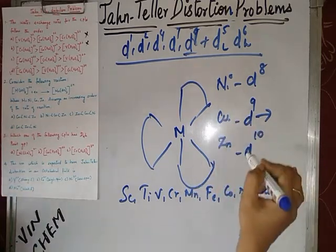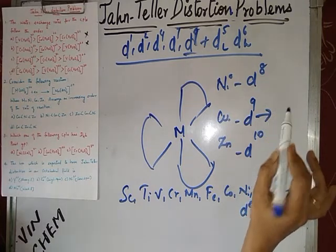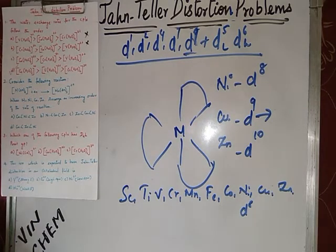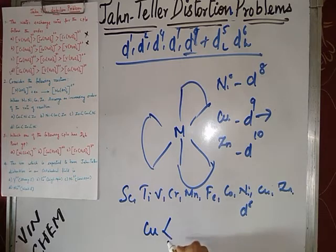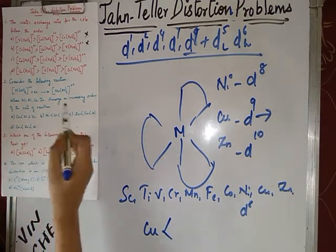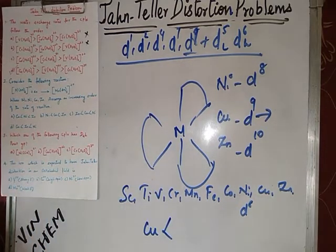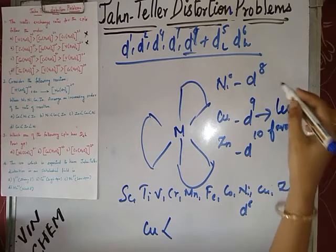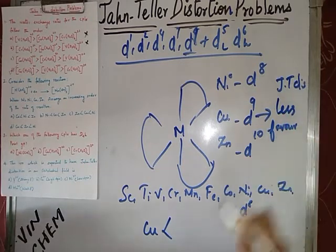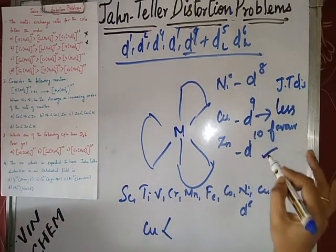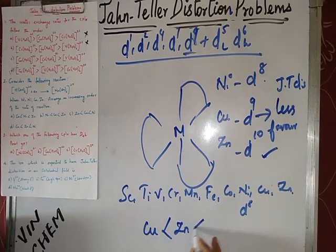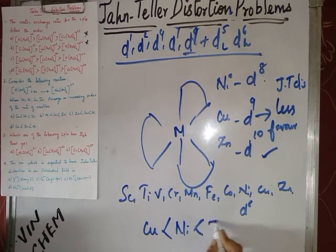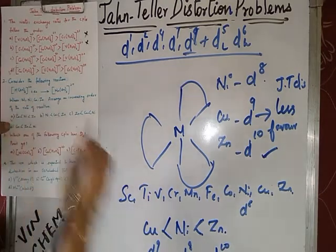When Jahn-Teller distortion is present, the rate of the bidentate ligand substitution reaction is least favored — so copper will be at the last (slowest). Among nickel and zinc, zinc is d10 (completely filled) which is more favored, and then nickel. So the increasing order of rate of reaction is: copper < nickel < zinc.